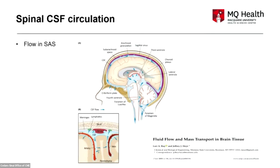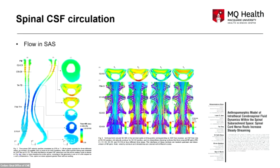Almost every diagram of CSF circulation just ends at the spine. CSF circulation in the spine is incredibly complex — a lot of this work has been done by engineers including Bryn Martin, showing that spinal nerve roots, dentate ligaments, and arachnoid membranes have incredibly complex influences on spinal CSF flow. I won't go into further detail, but it is different to CSF circulation inside the head.